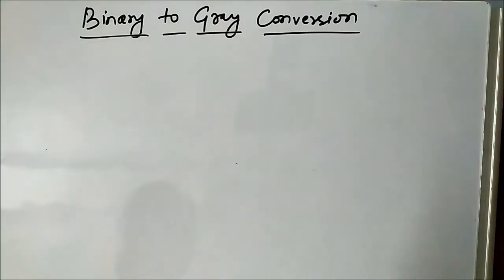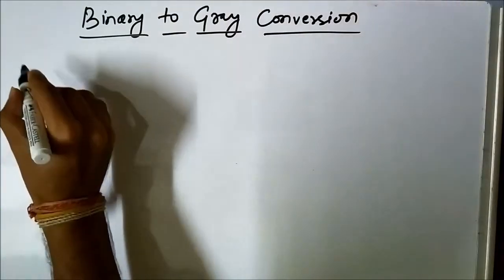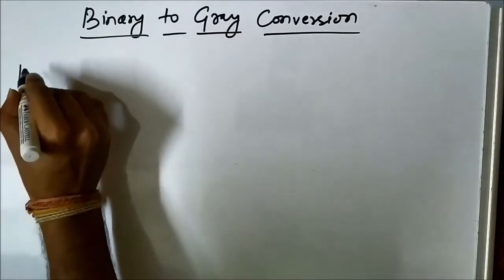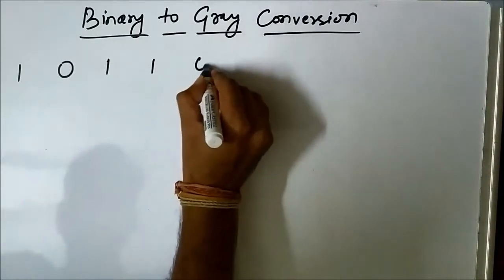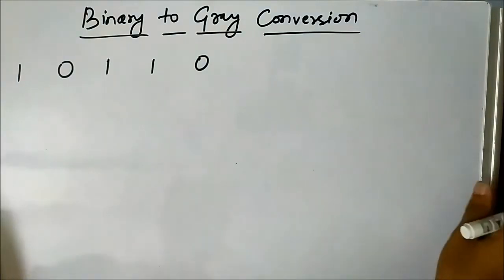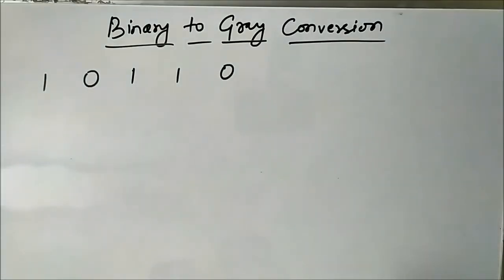Welcome to Engineering Tutorial. In today's video we are going to discuss binary to gray conversion — how to convert binary code into its equivalent gray code. Suppose we have been given a binary number, the binary code 1 0 1 1 0. This is the binary code given to us and we have to find out its equivalent gray code.